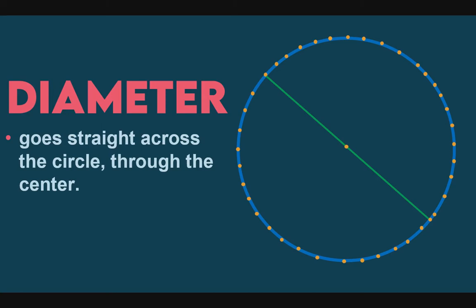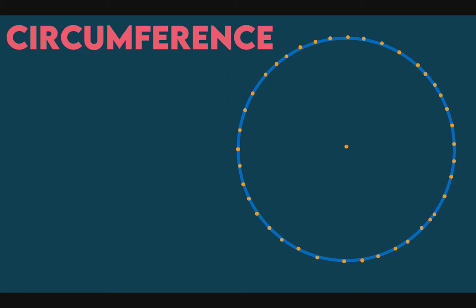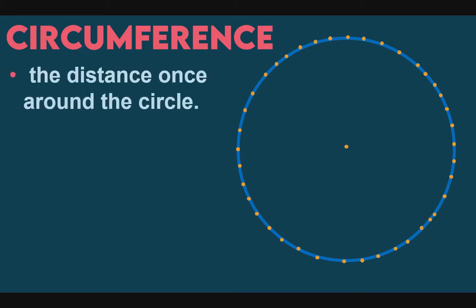Next, diameter. Diameter goes straight across the circle through the center. So the endpoints of a diameter, as we can observe here, are on the circle. The special thing about diameter is it passes through the center. So if it does not pass through the center, it is not a diameter. And its endpoints must be on the circle.